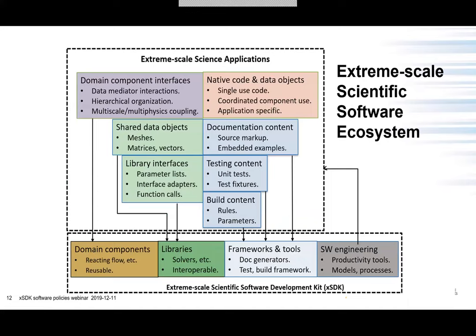Here is the overall extreme scale scientific software ecosystem. On top you have the extreme scale science applications, which have interfaces to domain components — reusable small physics pieces like reacting flow — enabling multi-scale multi-physics computation. Then there are interfaces to individual libraries, which can be solvers, mesh systems, and other code and data objects. Documentation, testing, and build content sit below that, with frameworks and tools underneath representing the software engineering portion. The XSDK consists of domain components, libraries, frameworks and tools, and software engineering portions.